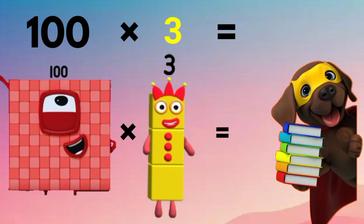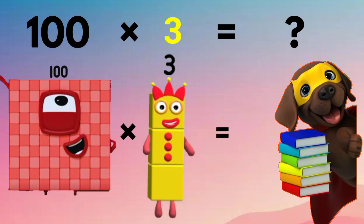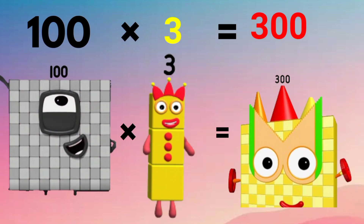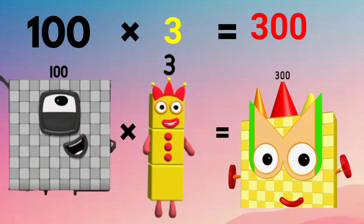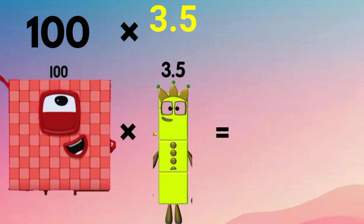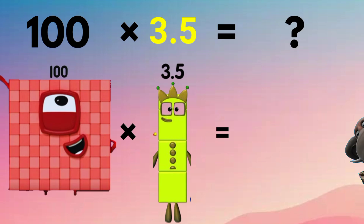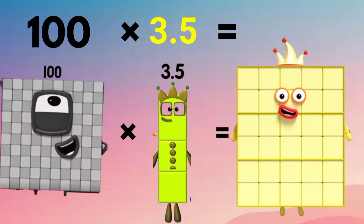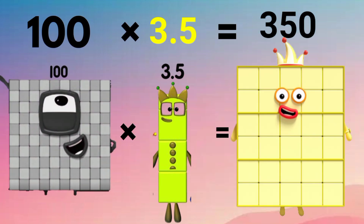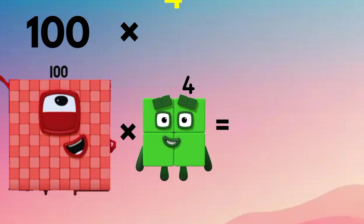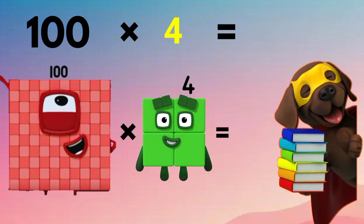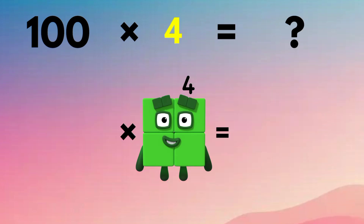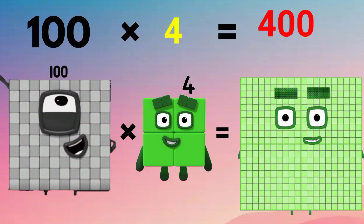100 x 3 equals 300. 100 x 3.5 equals 350. 100 x 4 equals 400.